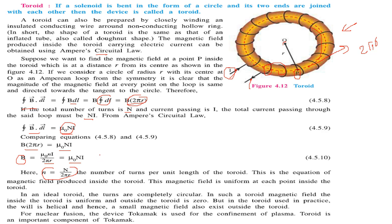This magnetic field is uniform at each point inside the toroid. If you take an example of an ideal toroid where the turns are completely circular, in this kind of toroid, the magnetic field inside the toroid is uniform and outside it is zero.